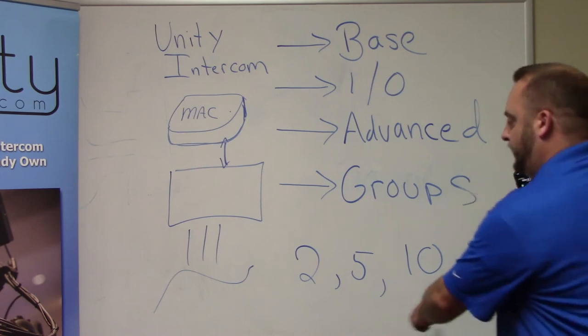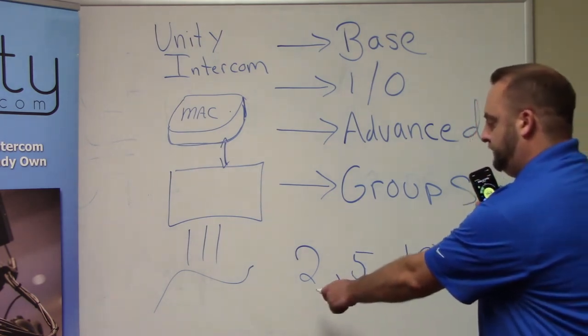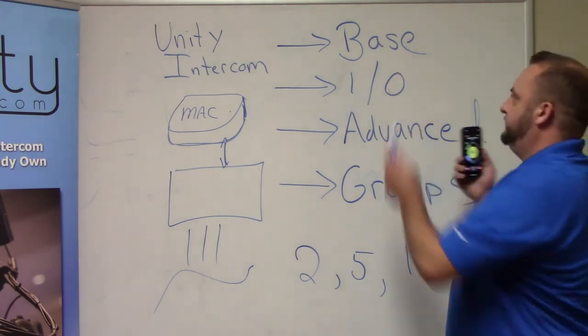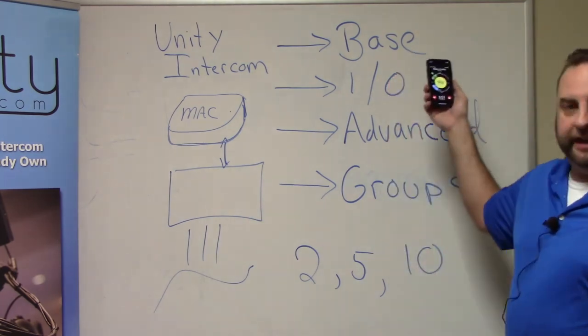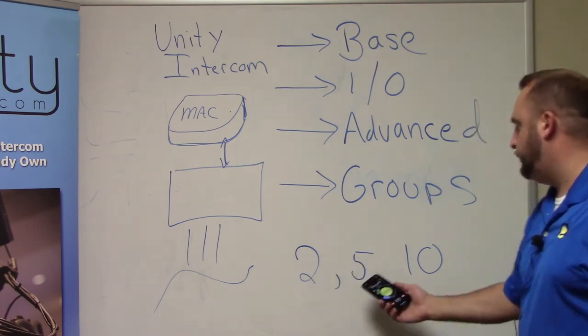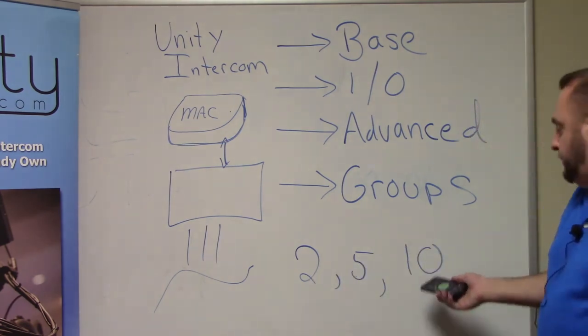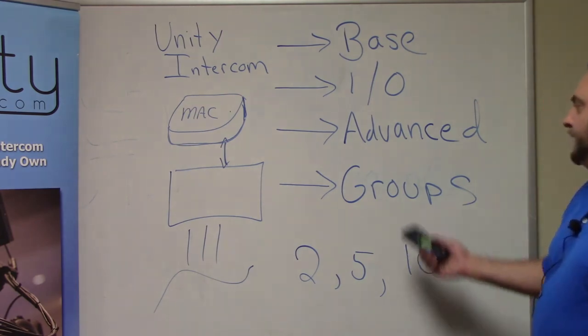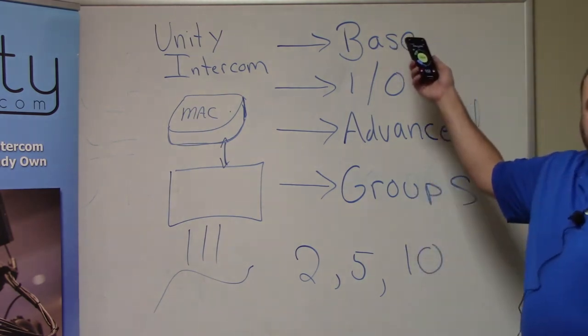Now the last thing of course is user licenses. With the base license, you have three user licenses. Obviously you're going to want more and we sell them in groups of two, five, and ten. So you could pick up a couple of ten user license packs. So if you bought two ten users, you'd have 23 with the three that come with the base.